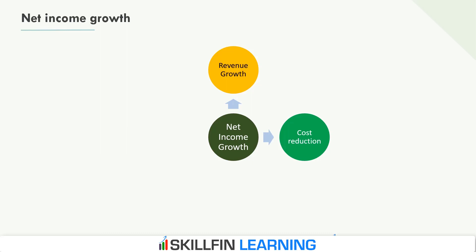Companies across most industries have started focusing on cost reduction to improve their margins. Earlier, the focus was just to reduce general and administrative costs by outsourcing shared services to low-cost locations like India and China. However, with increasing competition, many companies across the globe have started focusing on cost reduction through use of technology, spending management, artificial intelligence and machine learning, optimizing sales and marketing processes, and automation.